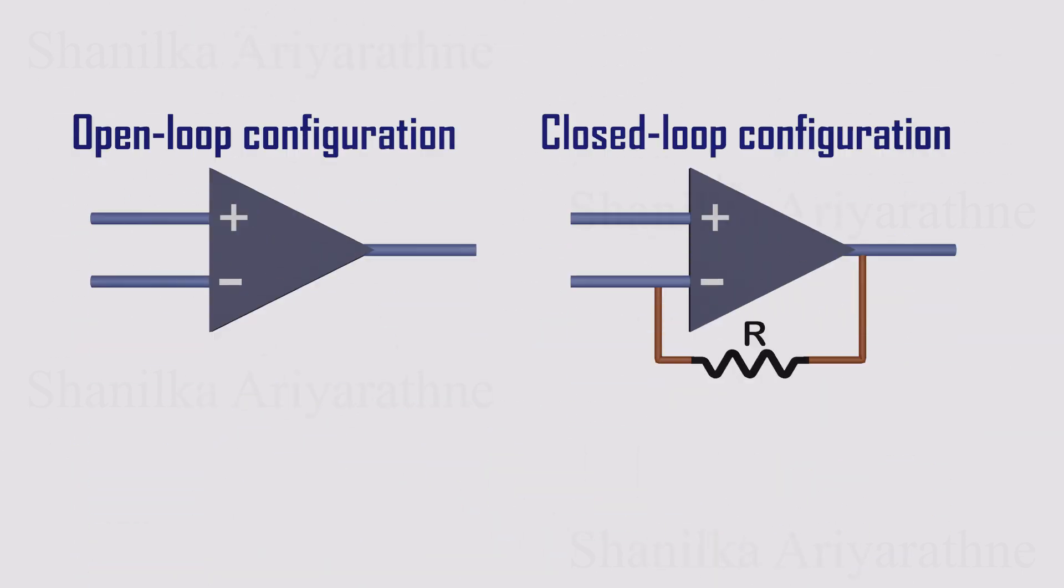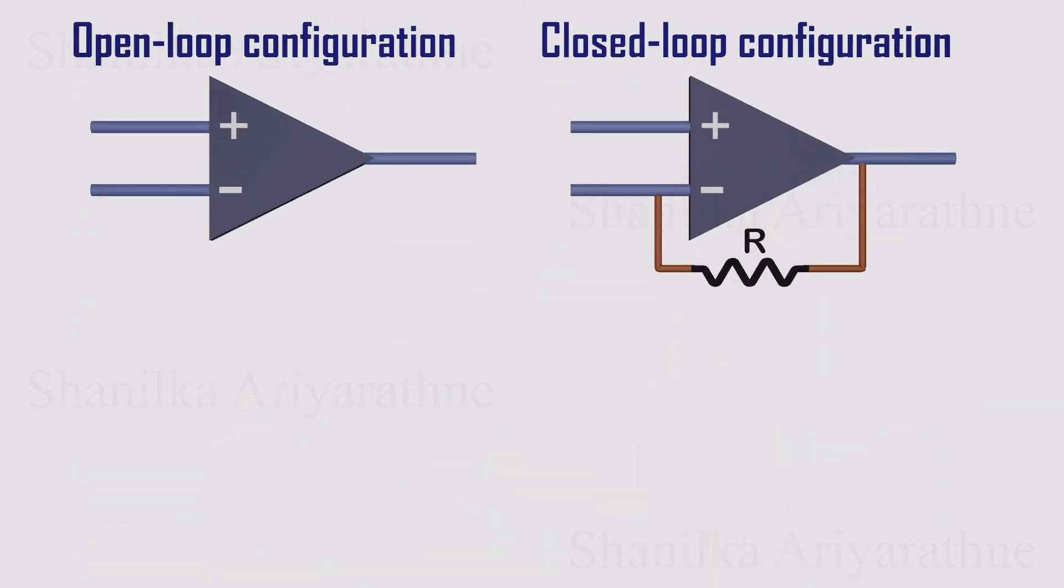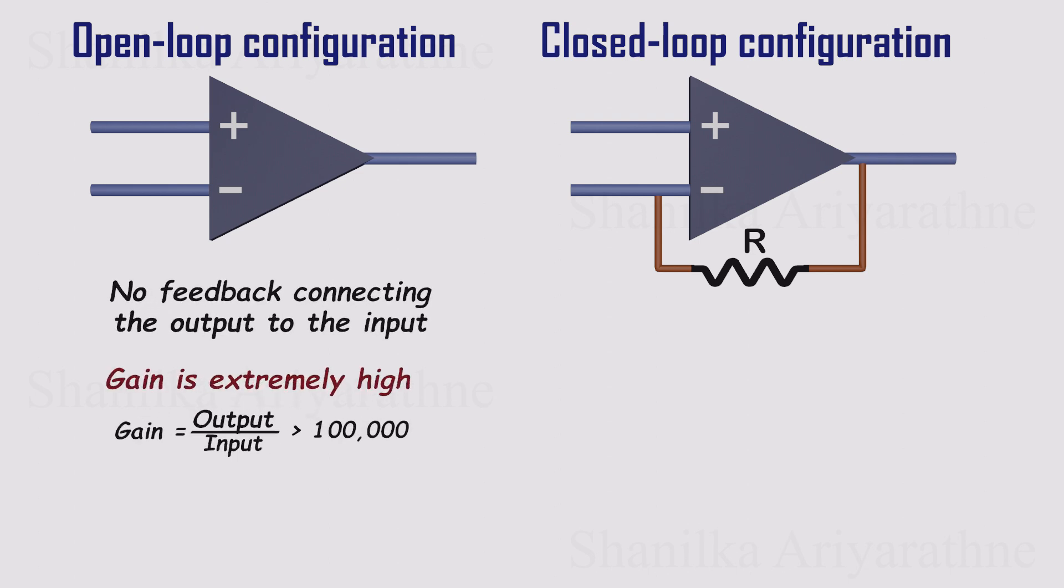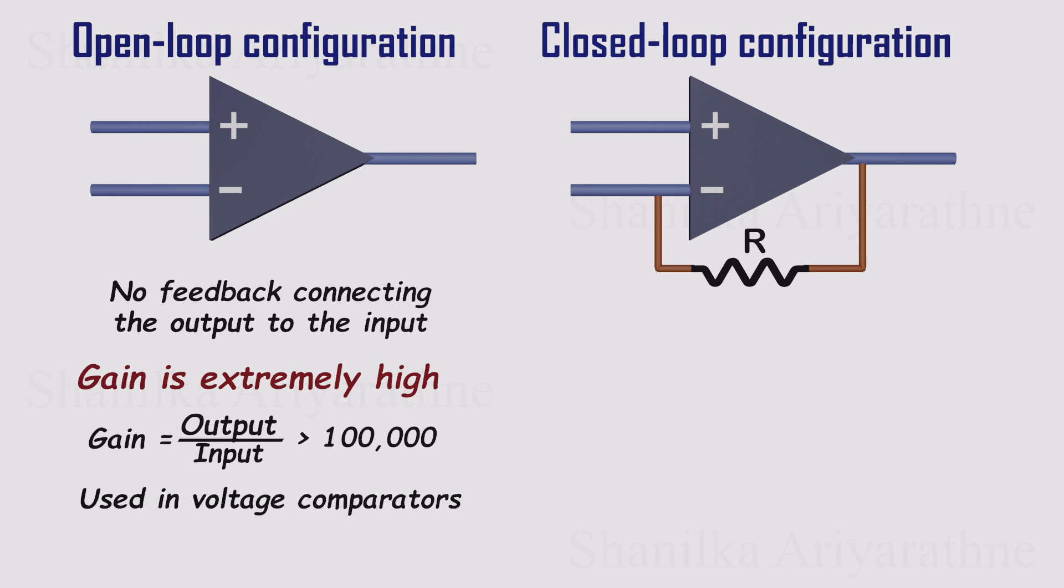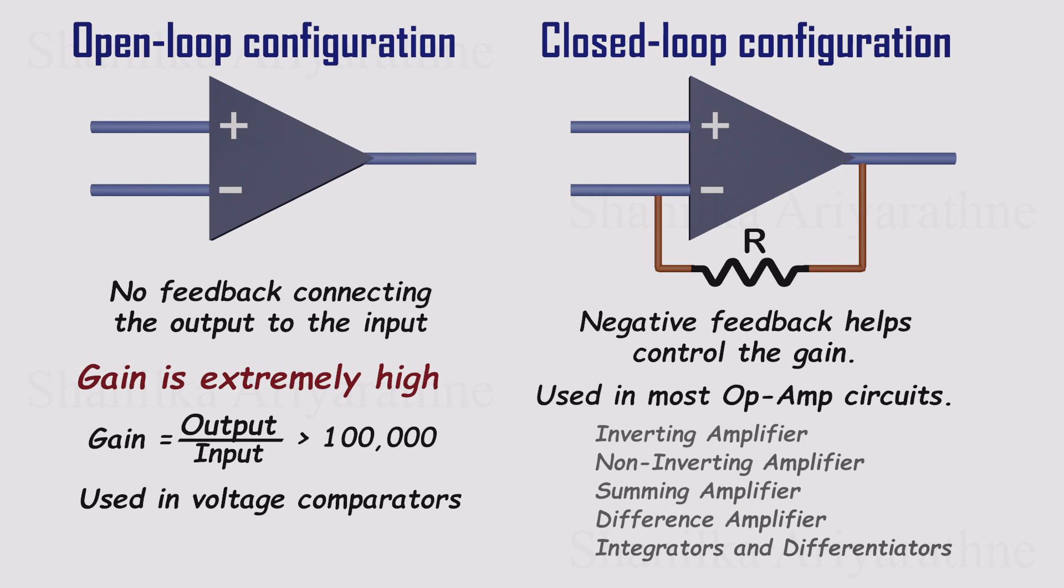Op-amps are usually used in one of two modes, open loop or closed loop. In open loop, there's no feedback. So the gain is enormous. Hundreds of thousands or more. That's why open loop mode is mainly used in comparators, where the only job is to figure out which input is bigger. We've got a full video on comparators, link in the description. But most real circuits use closed loop, with negative feedback through resistors. This feedback reigns in that massive gain, keeps the circuit stable and makes the op-amp behave in a nice, linear way. Closed loop designs are the backbone of op-amp circuits.